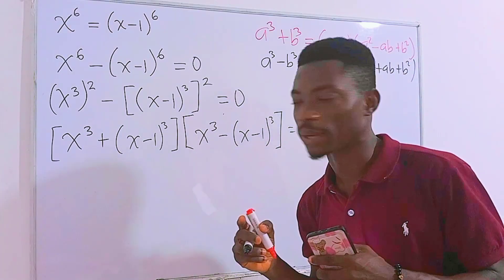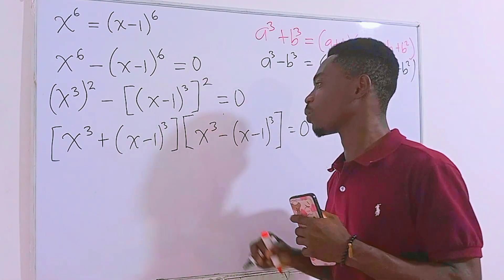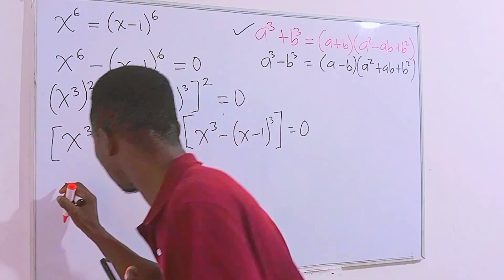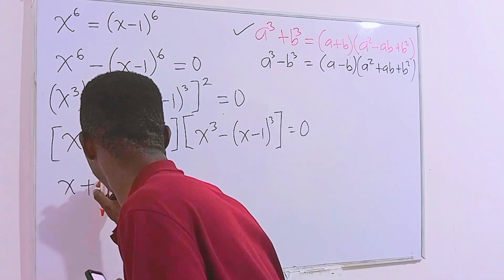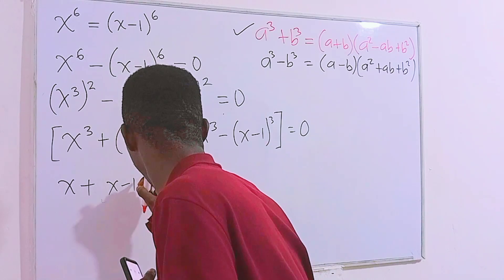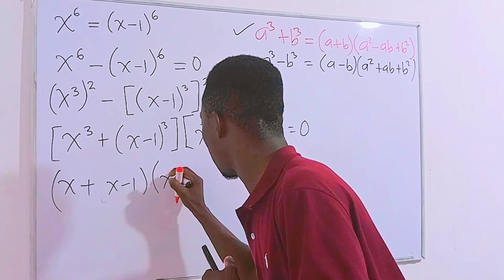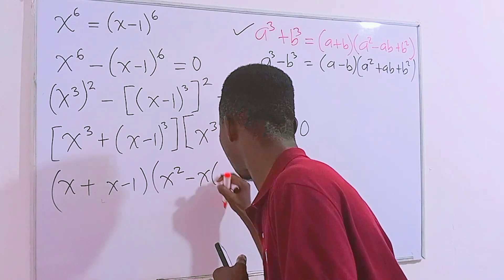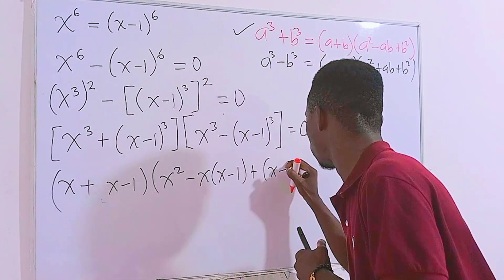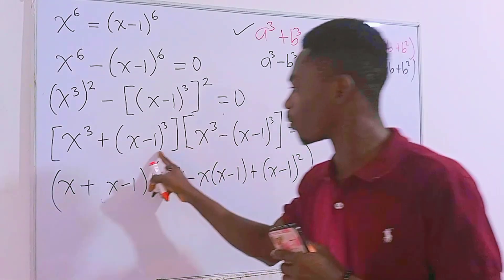Let's start with the first factor. Going by the sum of cubes identity, we are going to have the first factor as x plus (x minus 1), then the second factor is x squared, minus x times (x minus 1), then plus (x minus 1) squared.